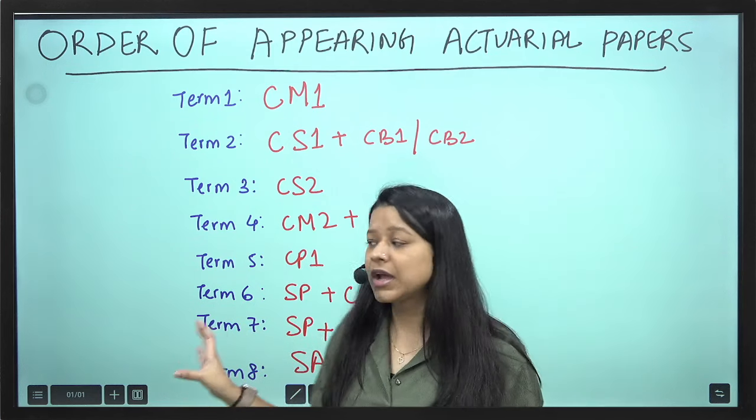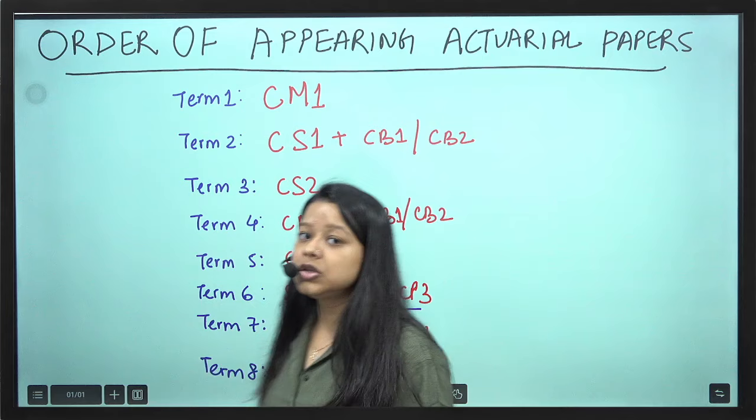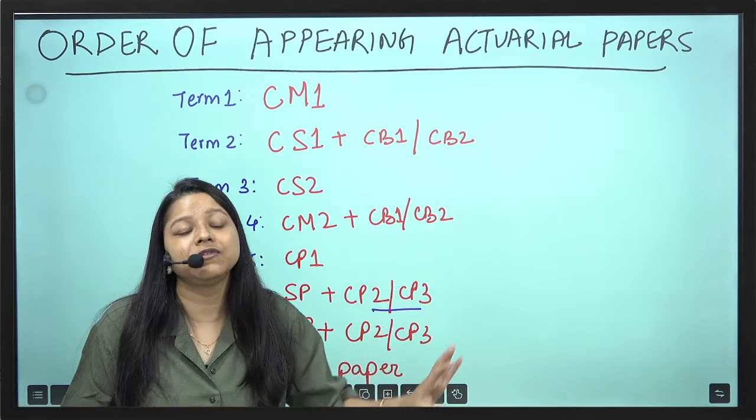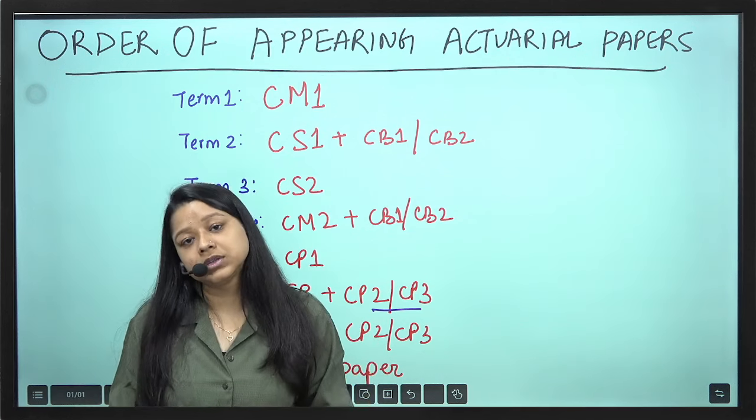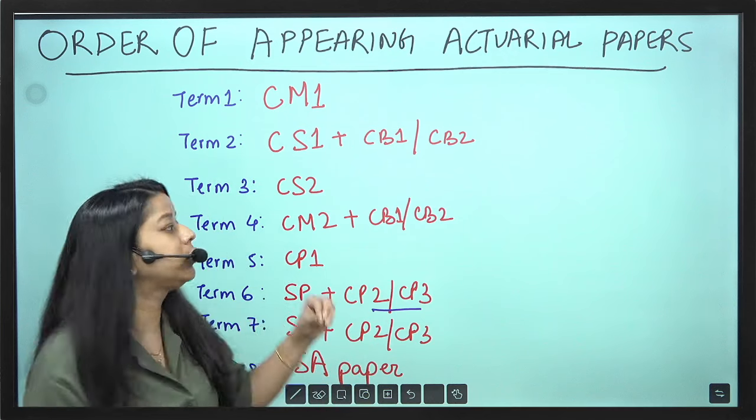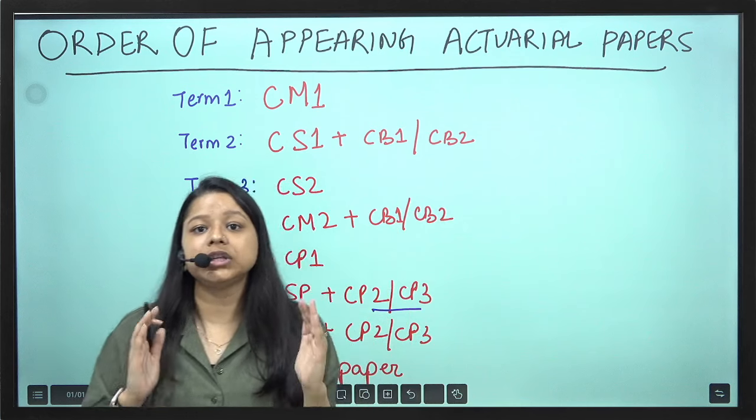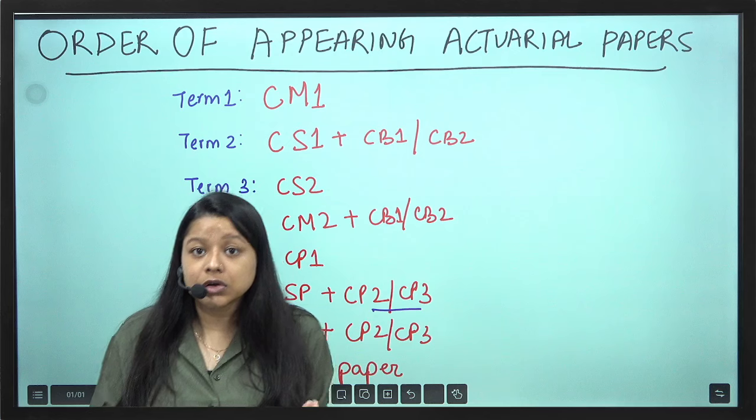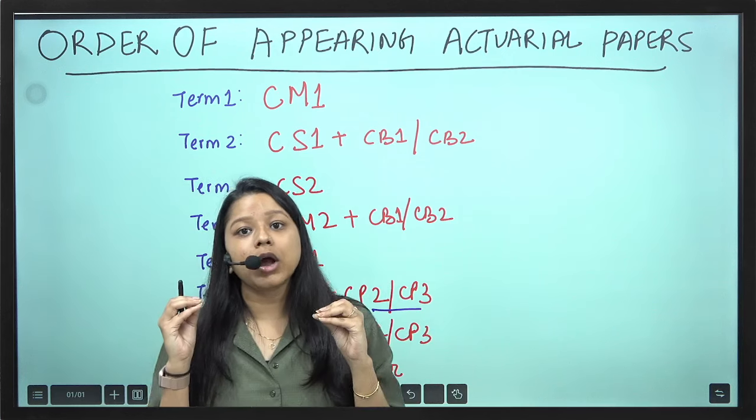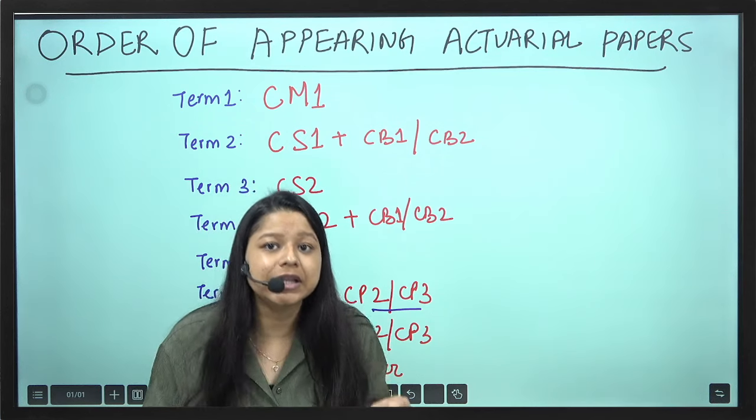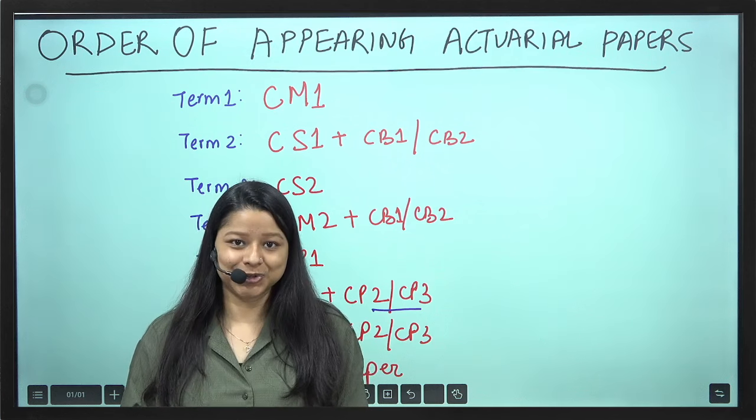SP paper needs 200 to 250 hours of study, and term 7 will be your second SP paper and CP2 or CP3. Term 8, again your essay paper. This is an 8 term timeline that we have set. We have lot of students who have done this. Considering there might be some unwanted situations or you might not be able to clear your exam, then we can say plus 1 or plus 2 terms. You can easily complete your entire 13 papers in a timeline of 4 to 5 years, considering you are putting in that 3 hours every day consistently. You are dedicated and consistent with your studies. Disciplined, then you can easily become a qualified actuary within 4 to 5 years. If you have any further questions, let us know in the description below. Thank you.